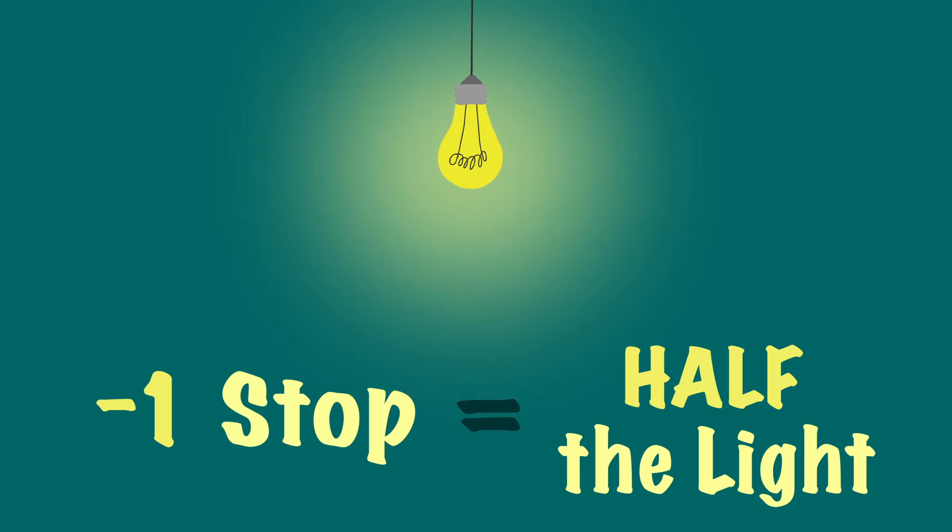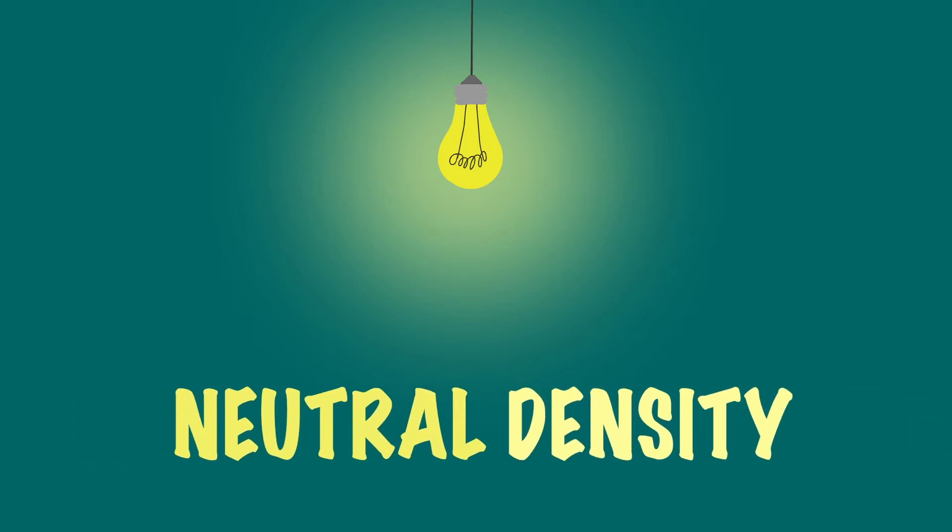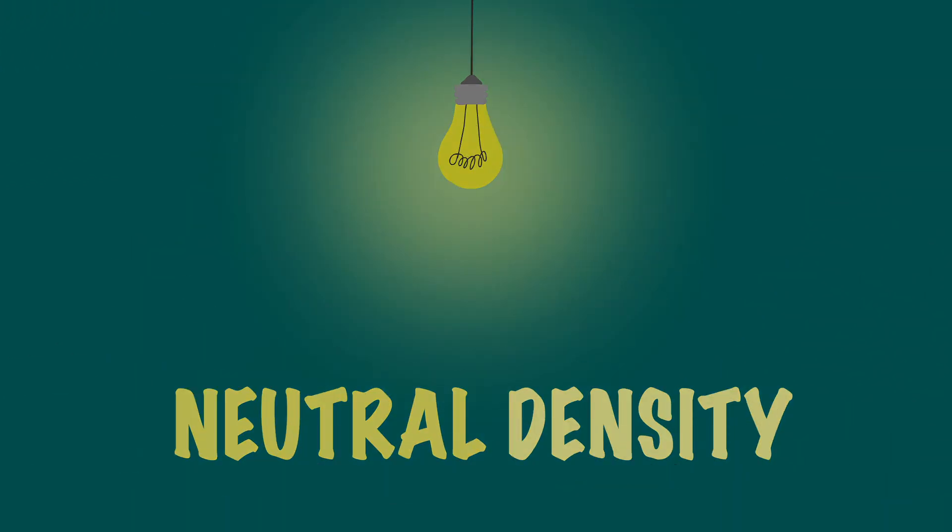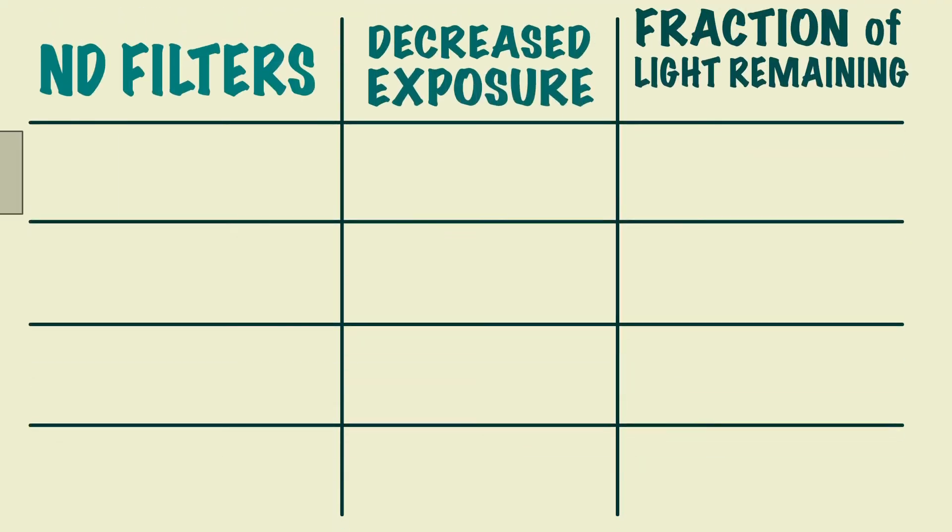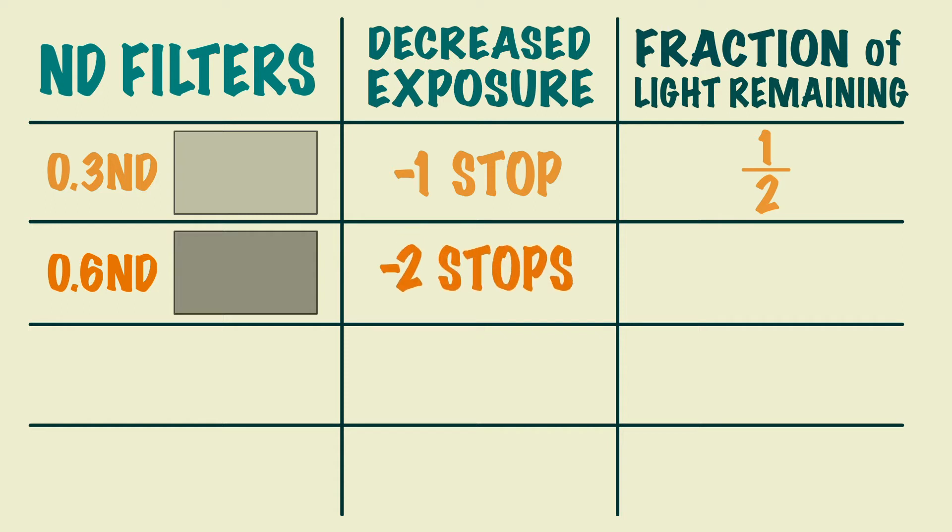One way to control the light is with the use of ND filters. This stands for neutral density. ND filters are placed in front of the lens or added internally in the camera. A 0.3 ND filter will decrease exposure by one stop of light. These filters go up in 0.3s, so the next filter would be 0.6, which would decrease exposure by two stops of light.